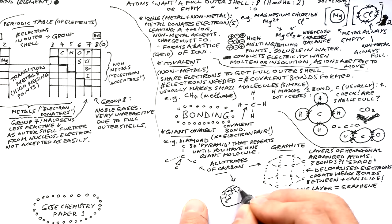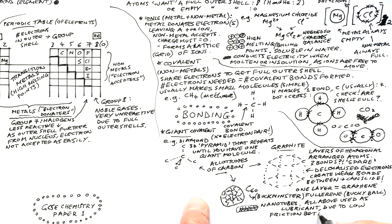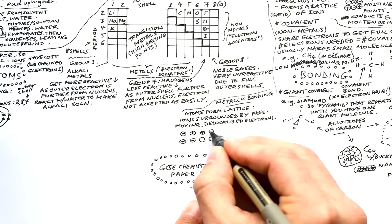Another allotrope of carbon is fullerene (buckminsterfullerene or buckyball) — it's like a football with 60 carbons joined in a sphere. Nanotubes are like a layer of graphene rolled into a tube. Graphite, fullerenes, and nanotubes can all be used as lubricants because they slide over each other easily — graphite in pencils works because layers slide off onto the paper.